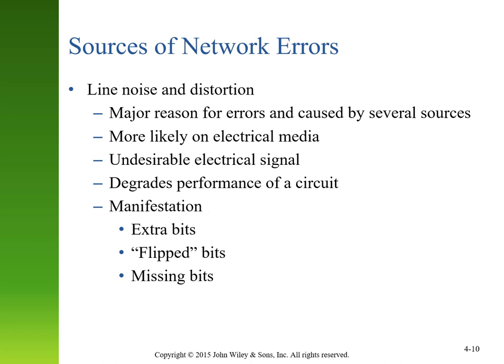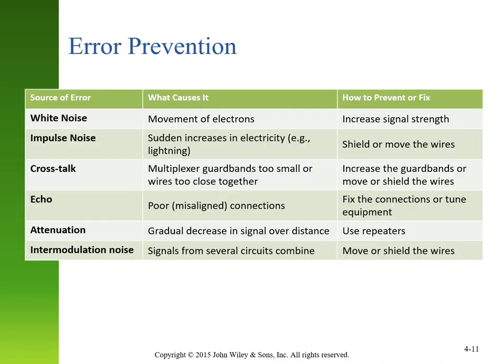Common sources of network errors include line noise and distortion. With electrical signaling, radio or electrical signals can interfere with network signals. Similarly, radio signals can be interfered with by other broadcasts in the same space. These interferences can degrade circuit performance and result in extra bits — receiving zeros and ones you weren't supposed to — flipped bits, where a zero becomes a one or vice versa, or missing bits where expected information isn't received.